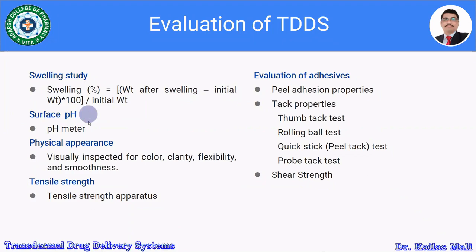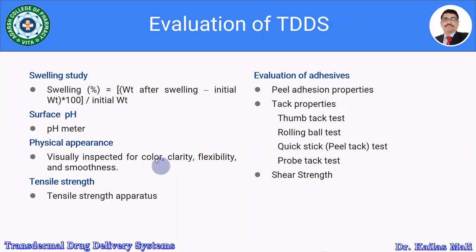Surface pH of the transdermal patch is important because the skin has a certain pH, and the patch should have a pH close to that of skin — otherwise irritation will result. It is measured using a suitable validated pH meter. Physical appearance of the patch is visually inspected for color, clarity, flexibility, and smoothness. Tensile strength is determined using a tensile strength apparatus to evaluate the mechanical properties of the patch.